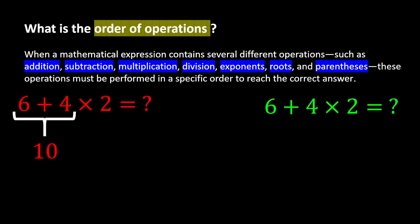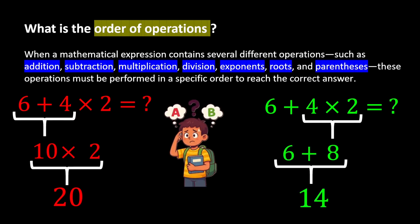If we first calculate 6 plus 4, we get 10. And 10 times 2 gives us 20. But if we first calculate 4 times 2, it becomes 8. And 8 plus 6 gives us 14. Now, which answer do you think is correct, 14 or 20? This is where the order of operations becomes important.